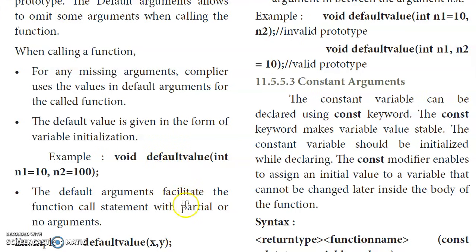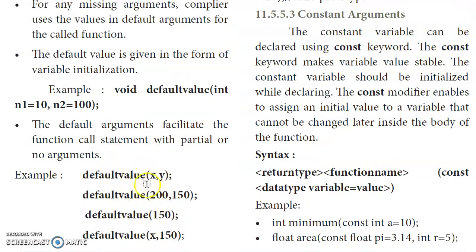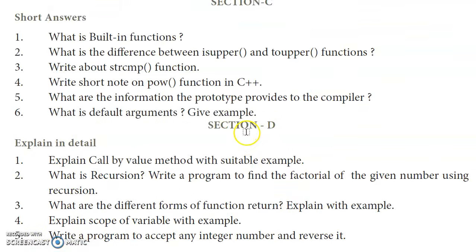When calling the function, partial arguments can be supplied and the remaining will use default values. This is how the default argument mechanism works in the calling function in C++.